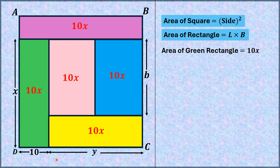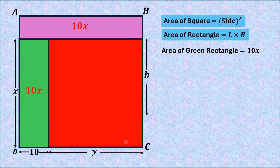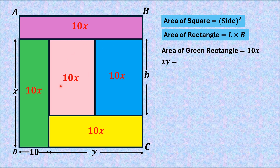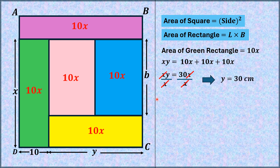Now let me consider this length as Y. We take this rectangle — its one side is Y and the other side is X, since this length is X. So the area of this red shaded rectangle is XY. Since this area is the sum of three rectangles, each having area equal to 10X, we get XY = 10X + 10X + 10X. From here, XY = 30X. Dividing both sides by X, we get Y = 30.